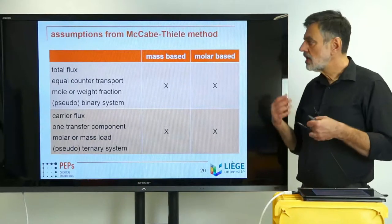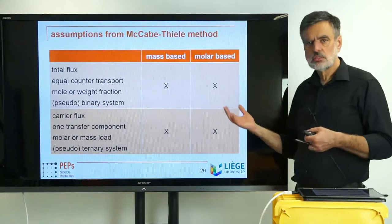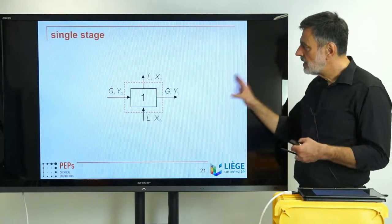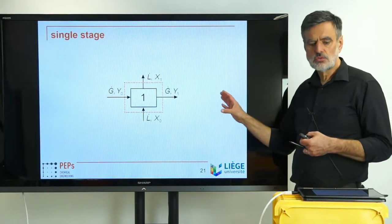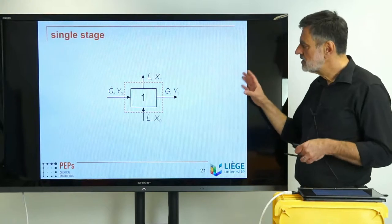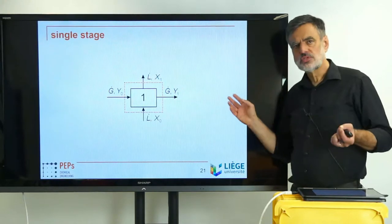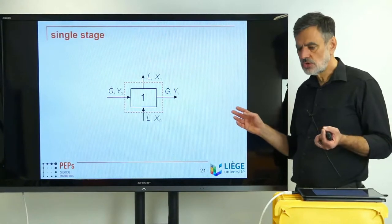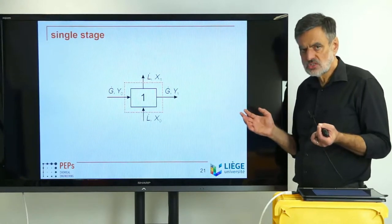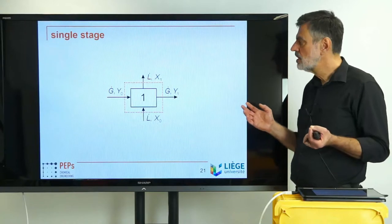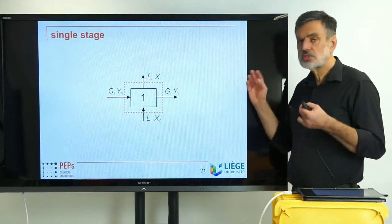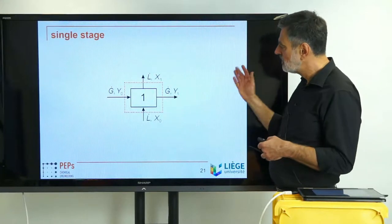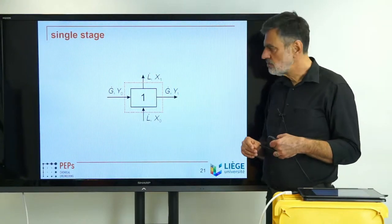Now I would like to show the basis for setting up a shortcut method for a single stage. For a single stage, calling it a shortcut method is a little far-fetched — it's just two equations that solve the design problem. Nevertheless, it fits into the context of shortcut methods because afterwards we will add more and more theoretical stages.